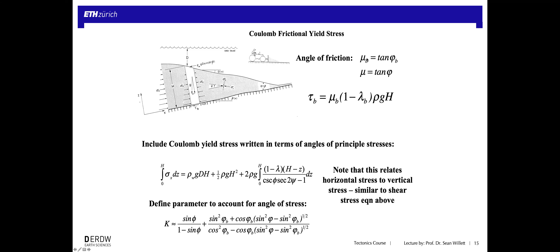So I've introduced two physical properties: mu for the sediment and mu_b for the base of the system. Sometimes we write these in terms of the angle of friction: the coefficient of friction is the tangent of the friction angle, which we call phi_b or phi. Going back to the force balance expression, we can now rewrite the shear stress tau_b in terms of this coefficient of friction and the normal stress rho·G·H. If you know the density, fluid pressure, height, and coefficient of friction, you can predict the shear stress.